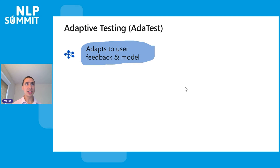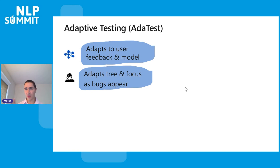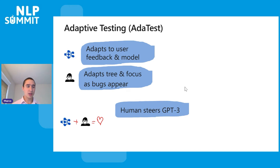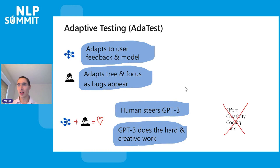So why is this adaptive? GPT-3 is adapting to the user's feedback and simultaneously adapting to model failures — trying to walk that line where the model is failing and the user is happy. The user is also adapting the tree and the focus as bugs appear. This combination of GPT-3 and human is really where the magic is, because the human is steering GPT-3. To just use GPT-3 alone and say 'generate bugs' is hard. But with human steering, it works really well — and GPT-3 does the hard work of checking many variations with creativity.